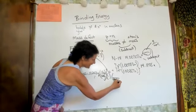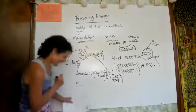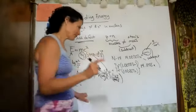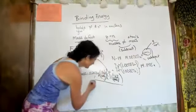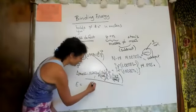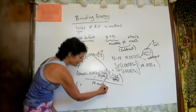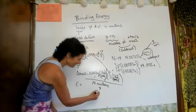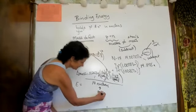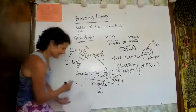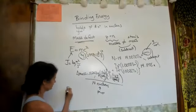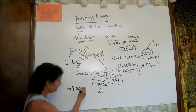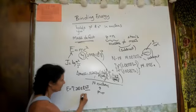We divide by 1000 to convert joules to kilojoules, then divide by 14 nucleons — because we're chemists and we like that extra step, and a nucleon is protons plus neutrons, our mass number. The answer comes out to about 7.218 × 10⁸ kilojoules per mole of nucleon.